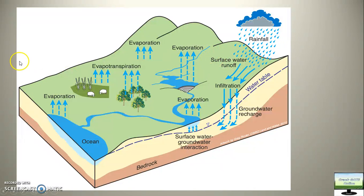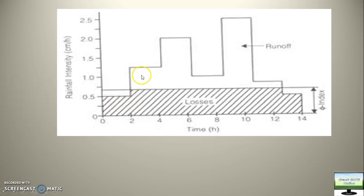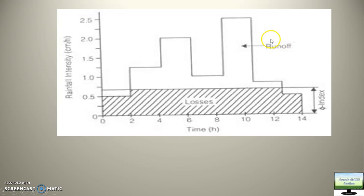I think you are clear with this picture. Now, if we draw a graph between rainfall intensity versus time — can you tell me what we call this graph? Please comment in the comment box. Suppose we got this graph. If you calculate the entire area under this graph, you will get the total amount of rainfall happening over a particular area. As I explained in the earlier slide, that entire rainfall does not get converted into runoff because some water will go inside the soil as infiltration and some will evaporate. Those are combinedly known as losses.